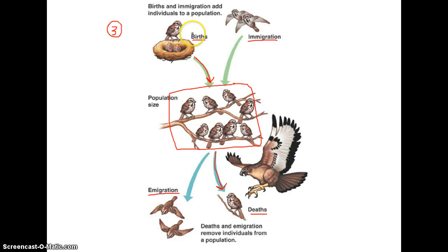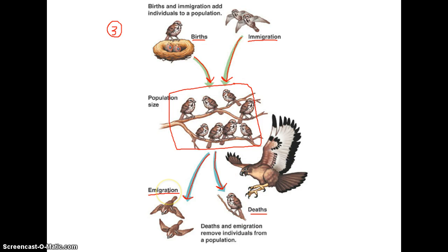Immigration is when individuals come into a population, which increases its size. Emigration — with an E — is when individuals leave a population, which decreases its size. So the third factor we use to describe populations is population growth, and the factors that influence growth are births, deaths, immigration, and emigration.